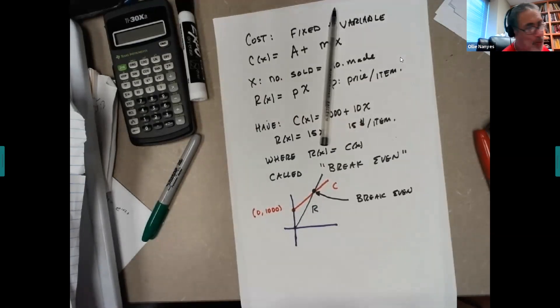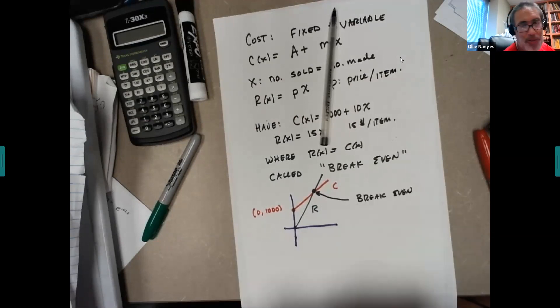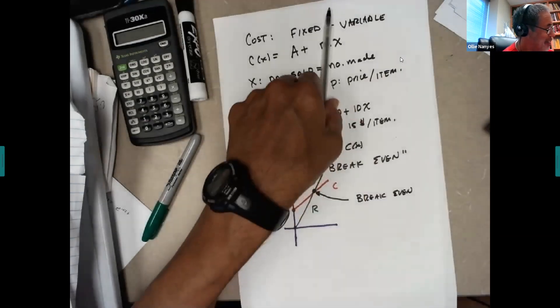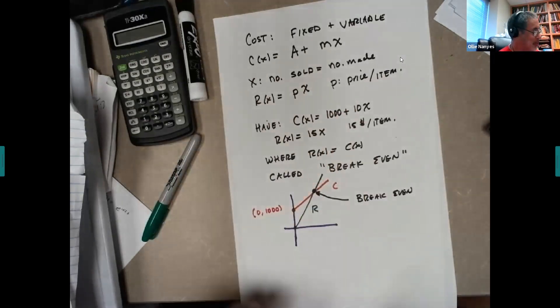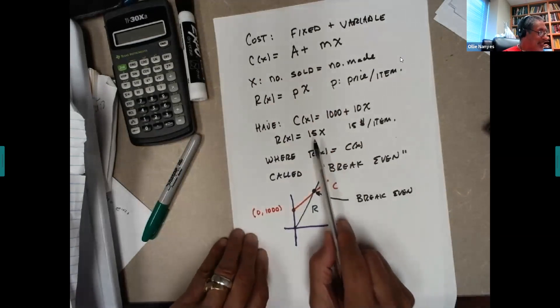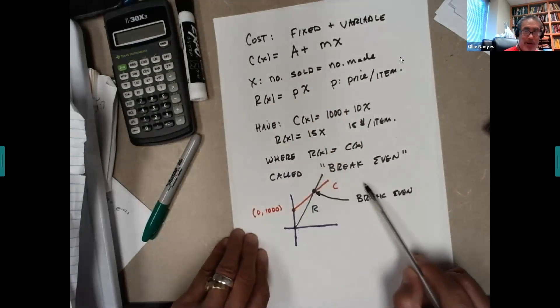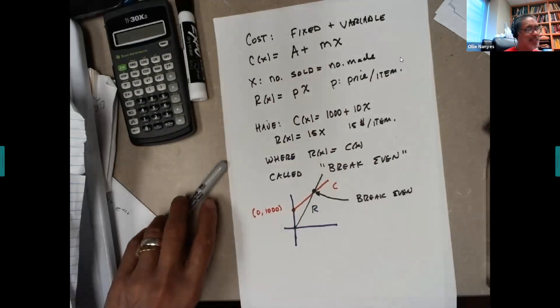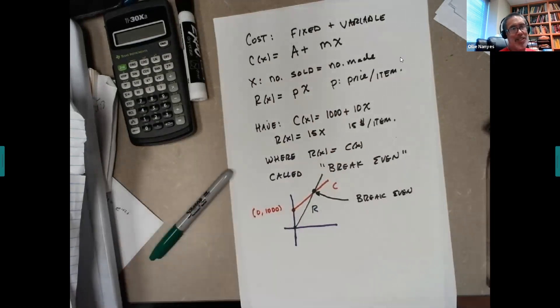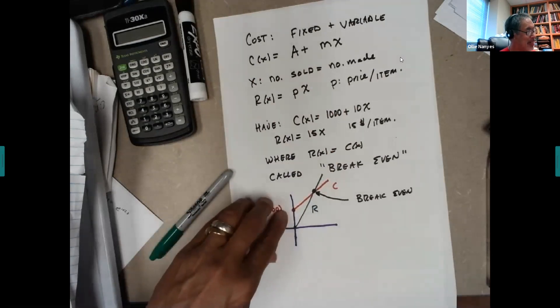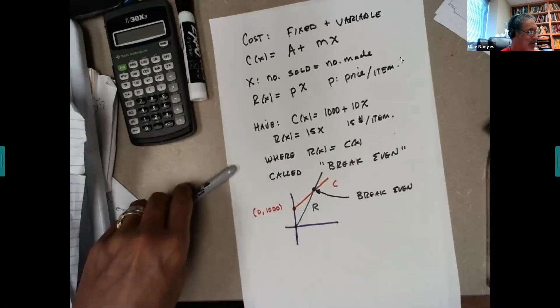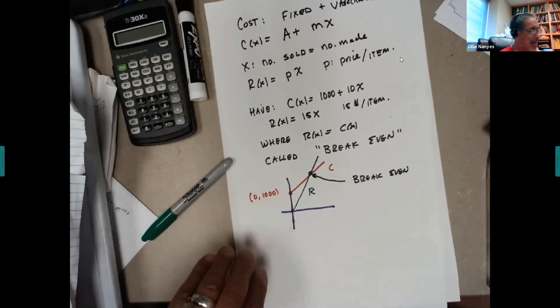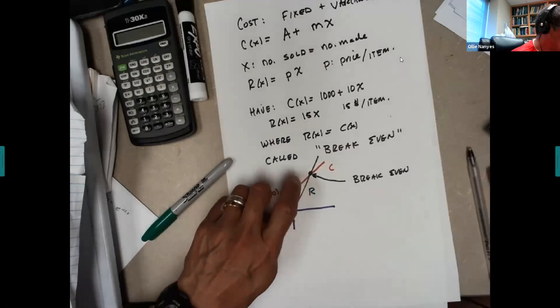So let's figure out where that occurs. Now here's a little food for thought. If from what you learned in algebra, had the slope of this been 10, this line would have been parallel and there'd have been no break even. So basically what that's saying, the common sense that if you're selling it for what it costs you to make it, you'll never make up this initial cost. So now let's go ahead and do the math and figure out where this is.